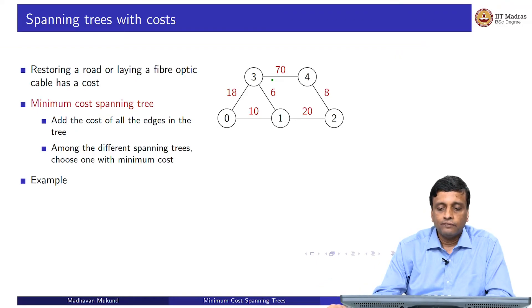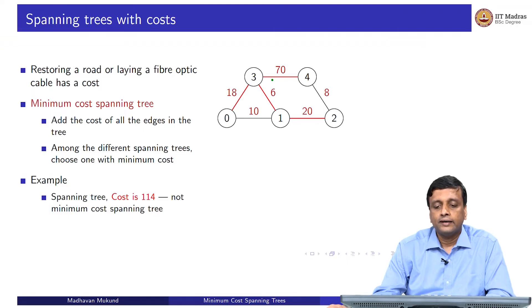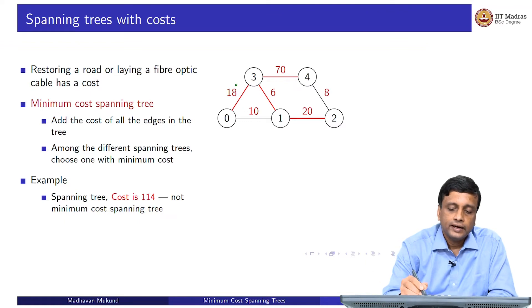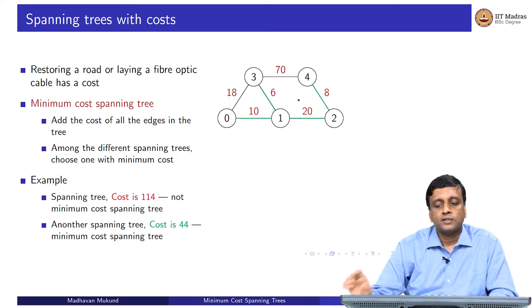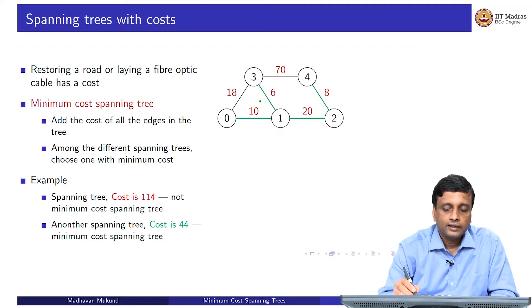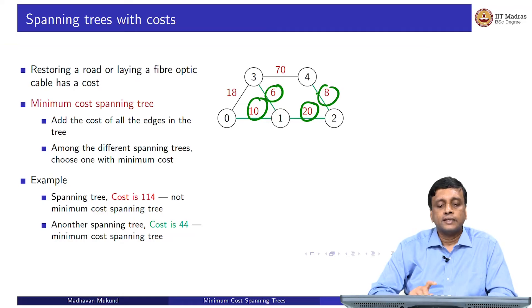Here for instance, we have this weighted graph and we construct one spanning tree, the red one. This will have its weight which is 18 plus 70 plus 6 plus 20, which is 114. But this is, as we saw, not the only spanning tree. We could also consider another spanning tree which has 10 plus 6 plus 20 plus 8, and we get a drastic reduction in the cost from 114 to 44. Our goal is now, given such a graph, to identify the minimum cost spanning tree.